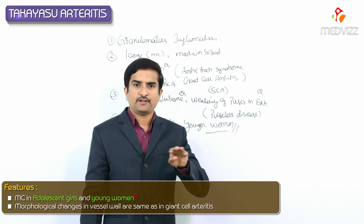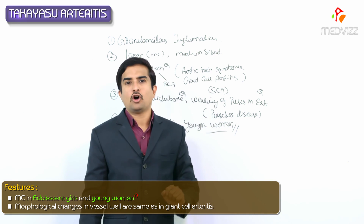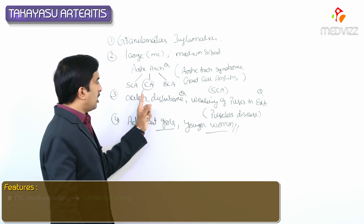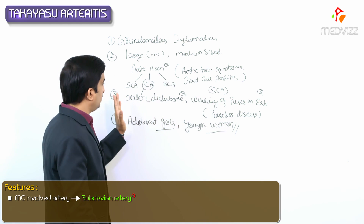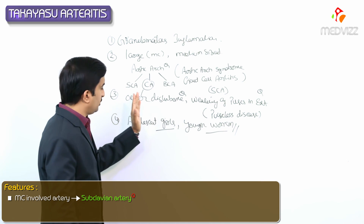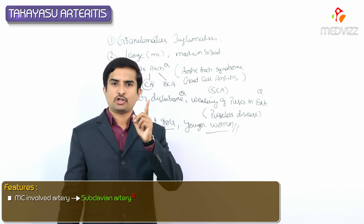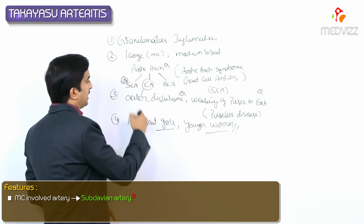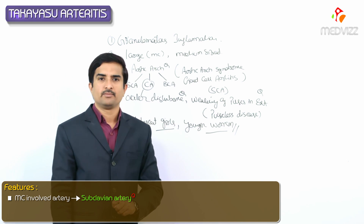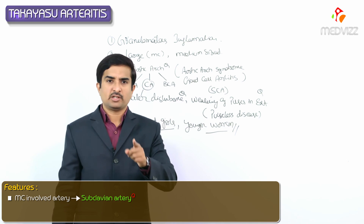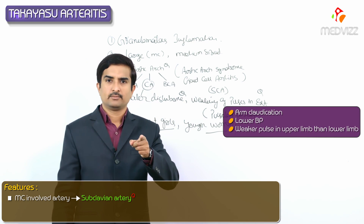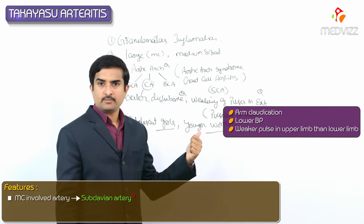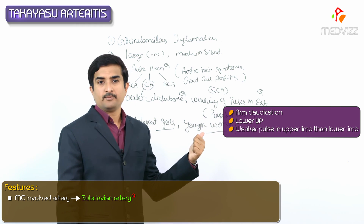Even though branches of the aortic arch include subclavian, carotid, and brachiocephalic, the most common artery involved in Takayasu is the subclavian artery. This is an important MCQ point — subclavian artery involvement is responsible for arm claudication.